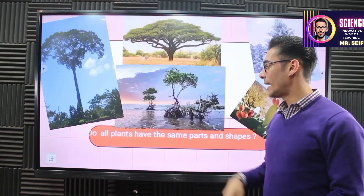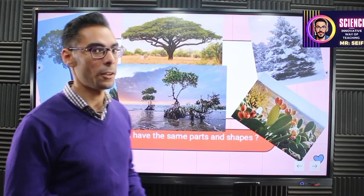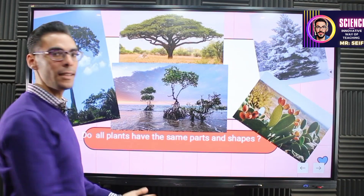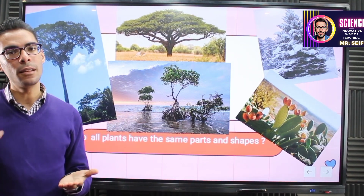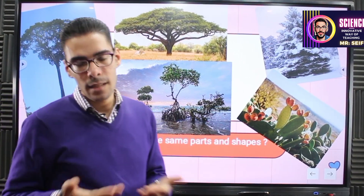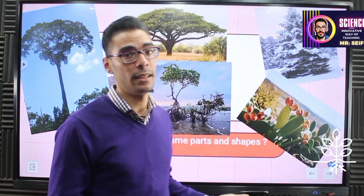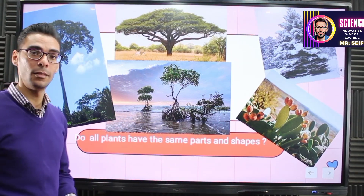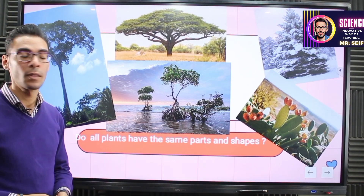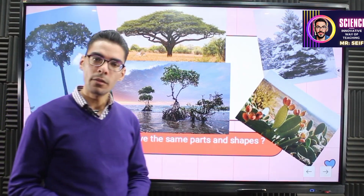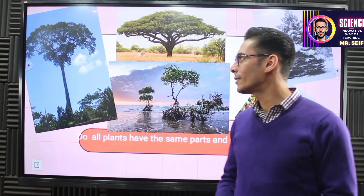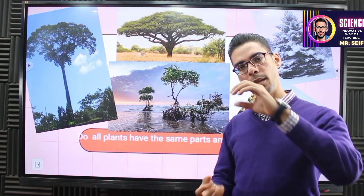How can the plant adapt to its environment? This is our topic. The examples in front of you are different because they live in different places — they do not live in the same place. A plant needs to take life requirements through its parts: the roots, the stem, and the leaves. The leaves are not the same shape, the stem is not the same size, and the roots are different. This means the plant changes something in its body to survive.